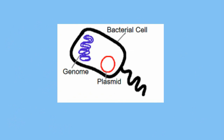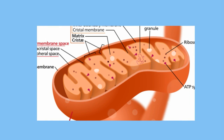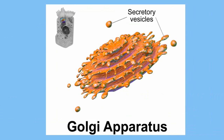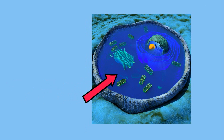Prokaryotes are simple bacteria and all of them are unicellular organisms, but this also allows them to duplicate quickly. Some prokaryotes have a flagellum that allows them to move. Again, they do not have any membrane-bound organelles.